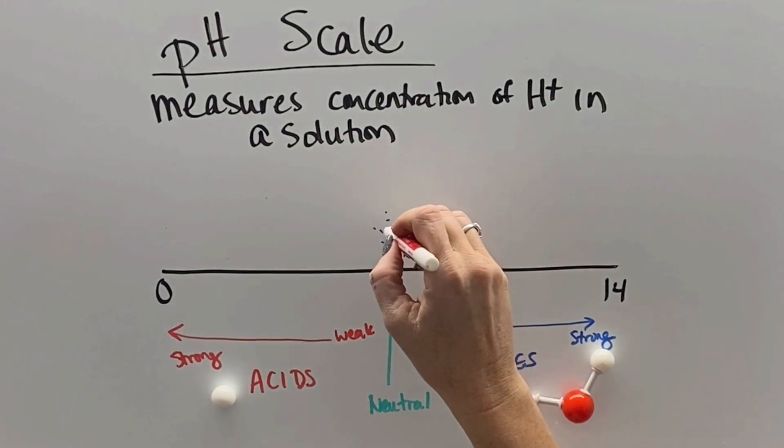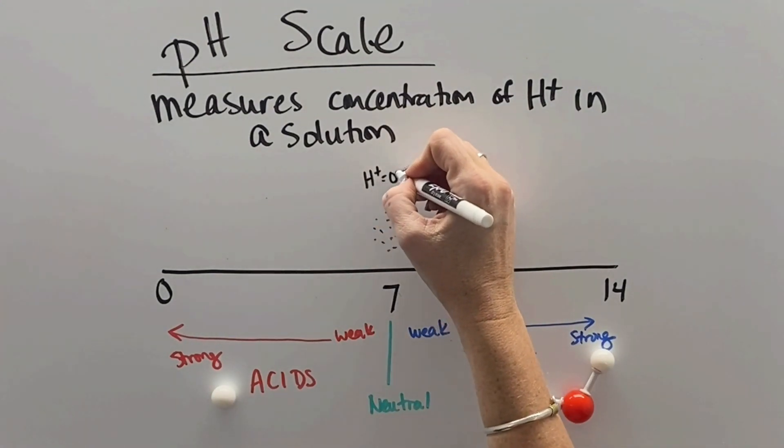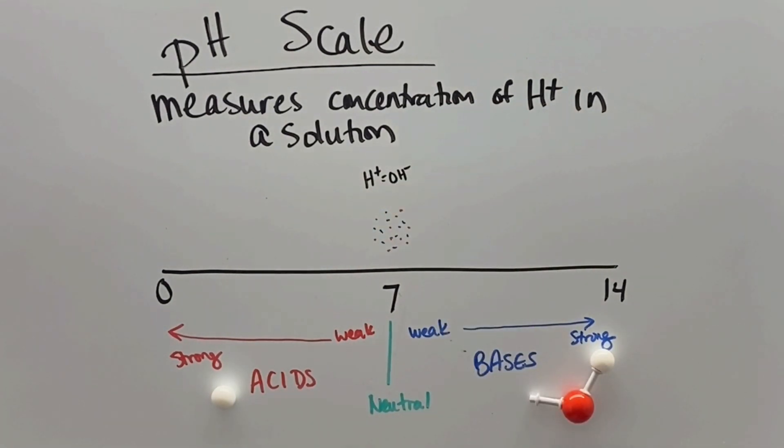The pH scale measures the concentration of hydrogen ions in a solution and goes from 0 to 14, with 7 being in the middle as neutral, where the hydrogen ions and hydroxide ions are equivalent.